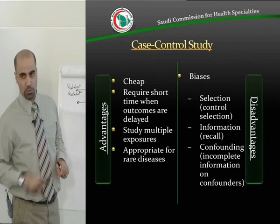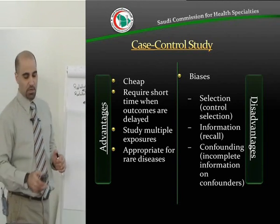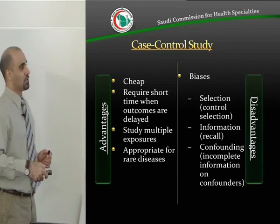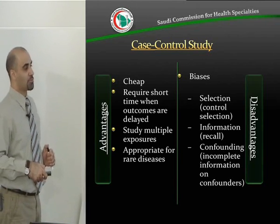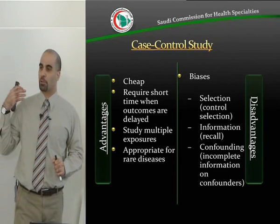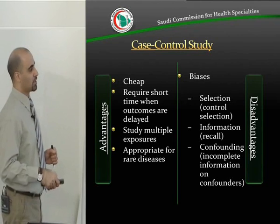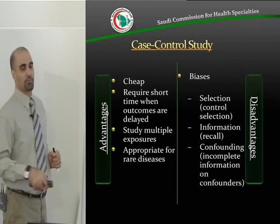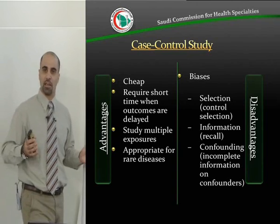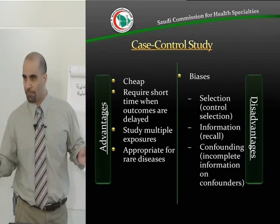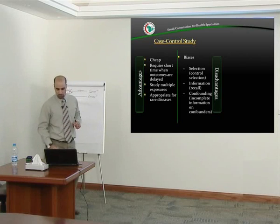Case-control studies are also appropriate for rare diseases, which will be discussed when covering cohort studies. The disadvantages include biases: selection bias when you select the wrong control group; information bias because you ask people to recall information from a long time ago and they tend to forget; and confounding due to incomplete information on other factors such as physical activity, diet, lifestyle, and so on.